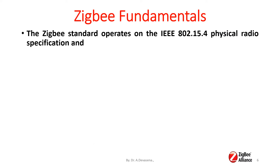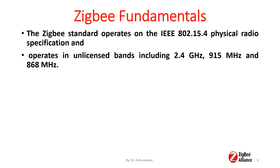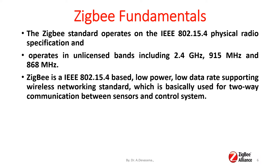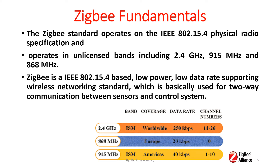Zigbee fundamentals: The Zigbee standard operates on the IEEE 802.15.4 physical layer specification. It operates in unlicensed bands including 2.4 GHz, 915 MHz, and 868 MHz. Zigbee is an IEEE 802.15.4 based, low power, low data rate wireless networking standard. It is basically used for two-way communication between sensors and control systems.